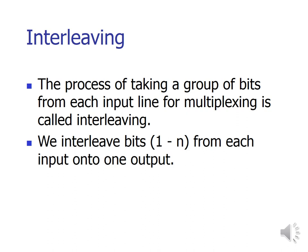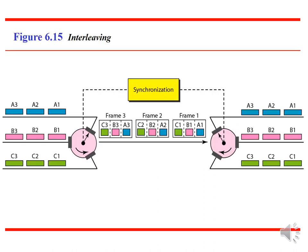The next concept is interleaving. TDM can be visualized as two fast rotating switches — one on the multiplexing side and the other on the demultiplexing side. The switches are synchronized and rotate at the same speed but in opposite directions. On the multiplexing side, as the switch opens in front of a connection, that connection has the opportunity to send a unit onto the path. This process is called interleaving. Similarly, at the receiver side, whenever the switch is open, that particular channel has the capacity to receive the data.